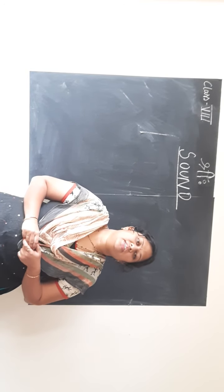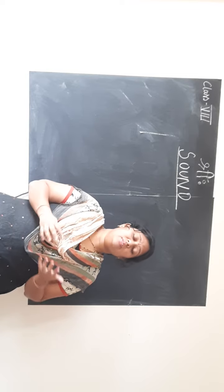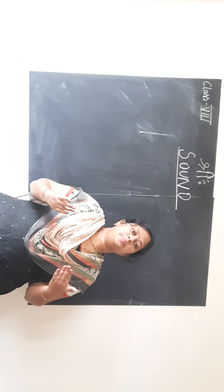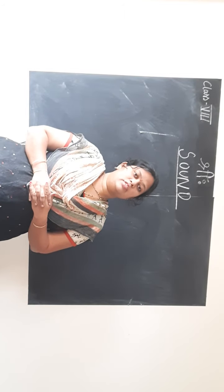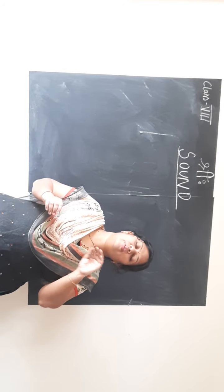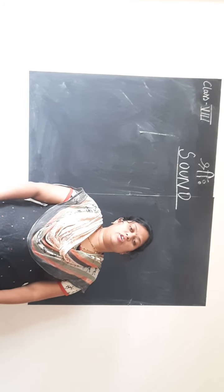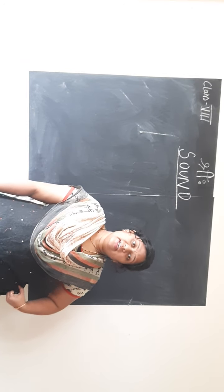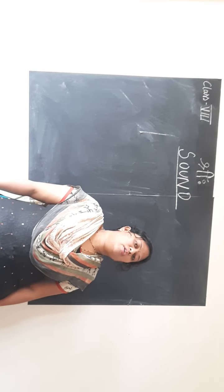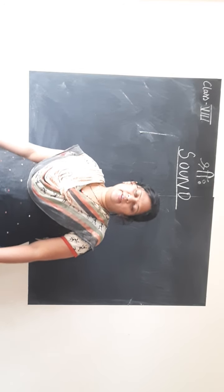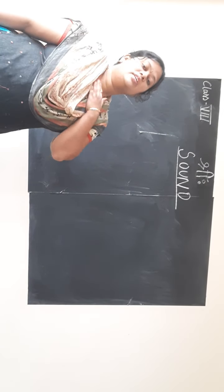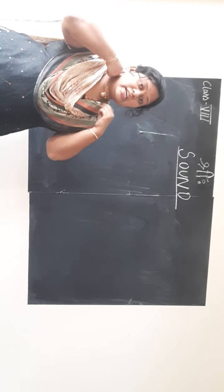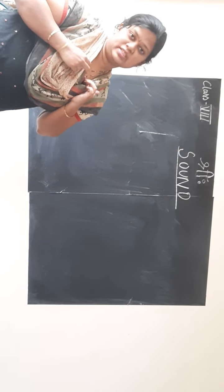Hello children. In the previous session we understood that sound is a form of wave, and sound is produced when objects vibrate. Vibration means the to-and-fro or back-and-forth motion of objects. Sound travels in the form of waves. We studied many activities and examples where we understood that sound is produced only when vibration is present.